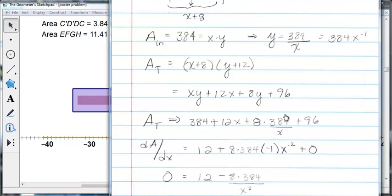So let's just go up here. Now we have xy. Well, I know that xy is 384. So I go 384 plus 12 times x. That stays the same. And then 8 times y. So since y is 384 over x, I have 8 times 384 over x plus 96, the same 96.